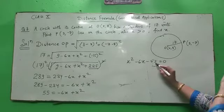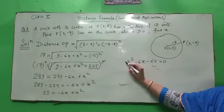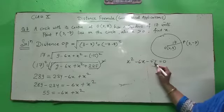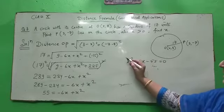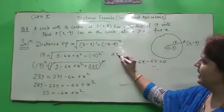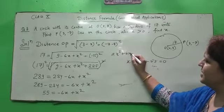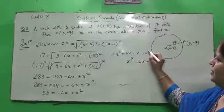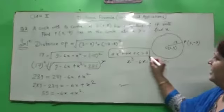Now 9 minus 4, 5, 8 minus 3 is again 5, 2 minus 2 is 0. So we'll get 55 is equal to minus 6X plus X square. This quadratic equation has come, but we will bring it to general form.